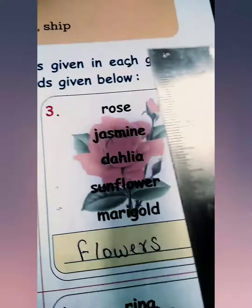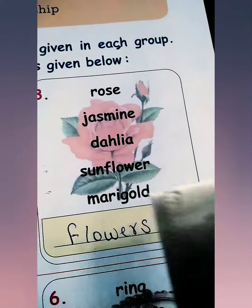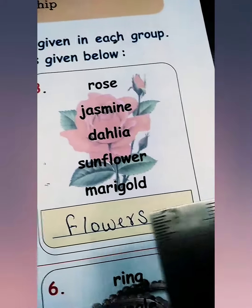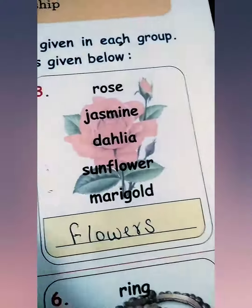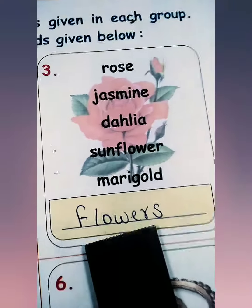Rose, jasmine, dahlia, sunflower, marigold — ये सारे चीज़ों के examples हैं, flowers के examples हैं।